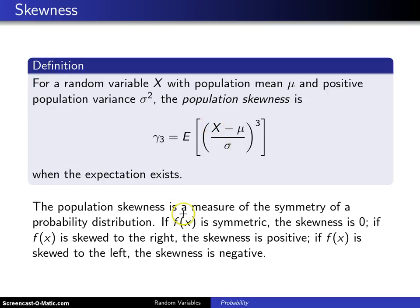The population skewness is a measure of symmetry of a probability distribution. If f of x is symmetric, the skewness is zero. Draw a quick picture of that, maybe draw that one in the middle here.